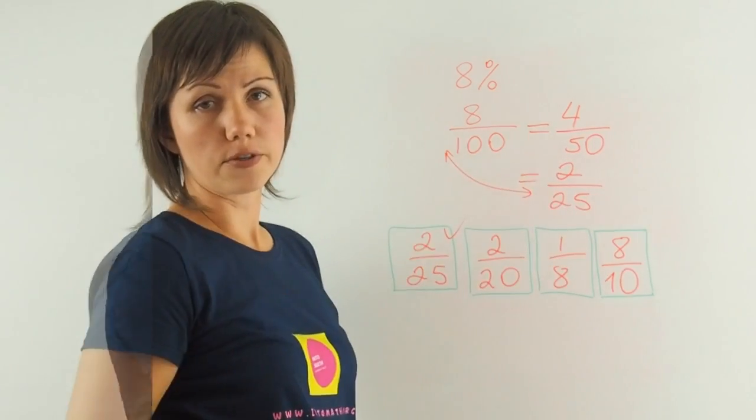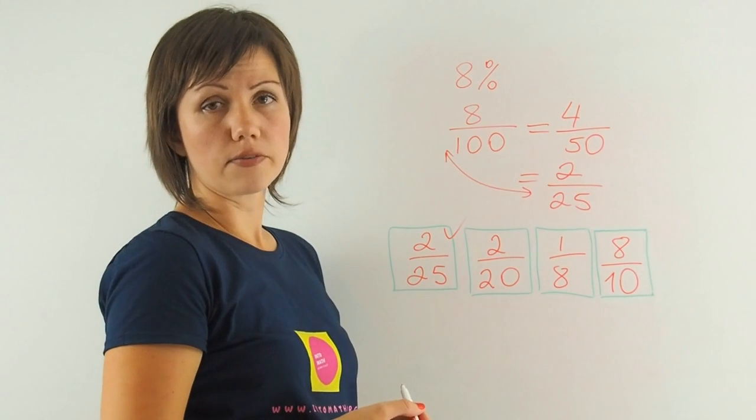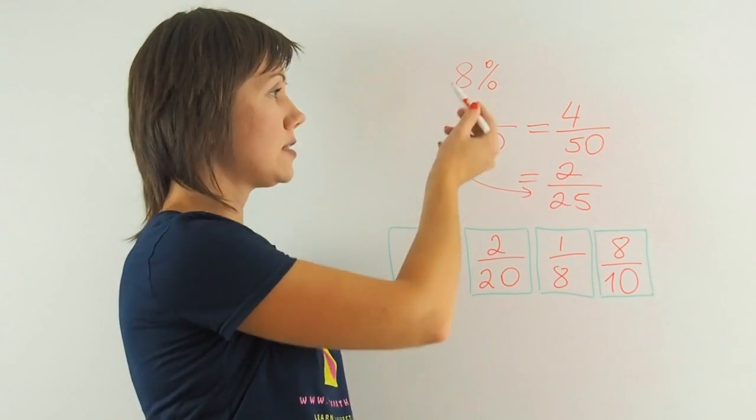This cannot be reduced any further. This answer is the correct one. 2 out of 25 is 8%.